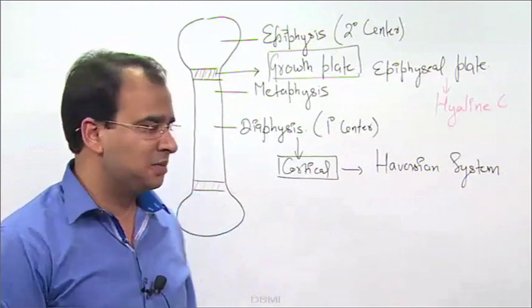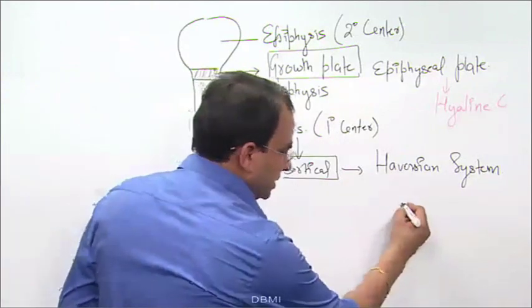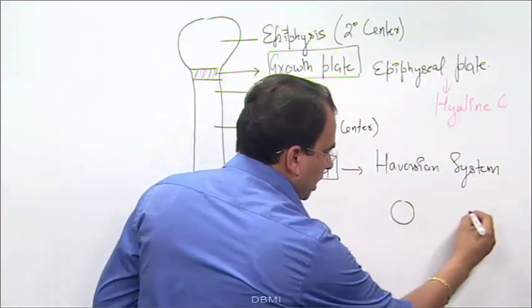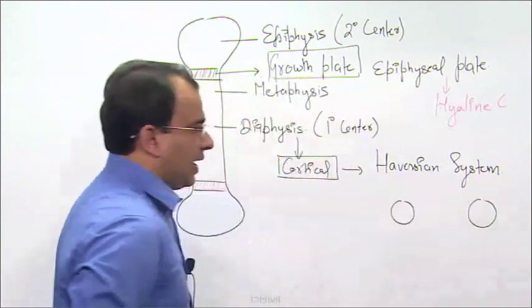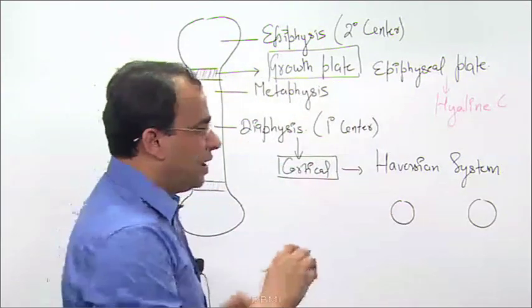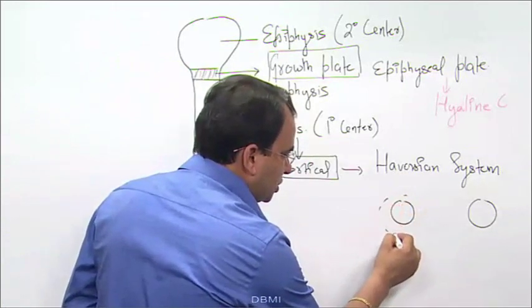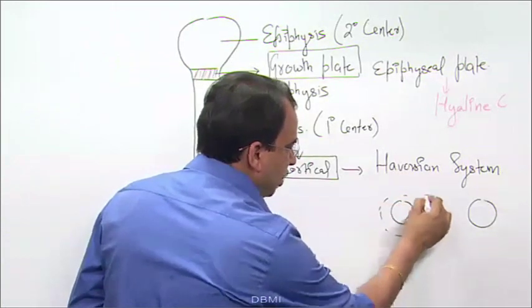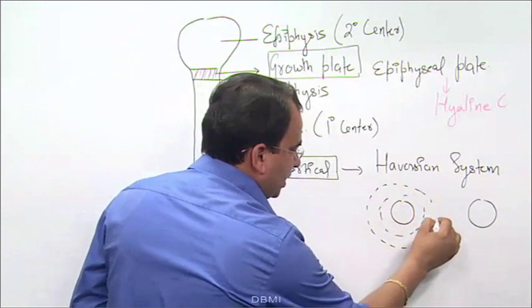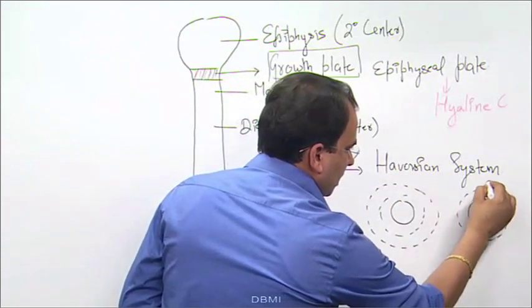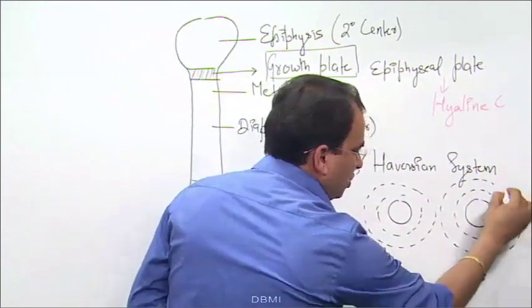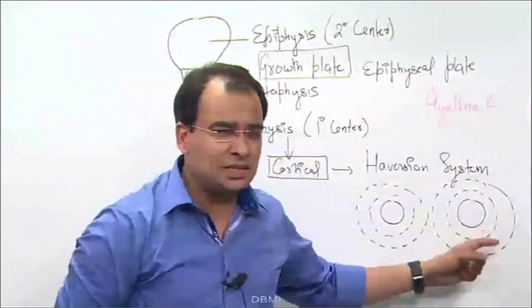What is haversian system? In the haversian system, we have these canal-like structures in which blood vessels and nerves are present, and around them we have osteocytes. So we have these osteocytes arranged around these neurovascular spaces.